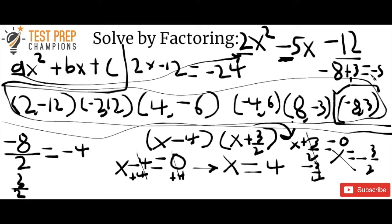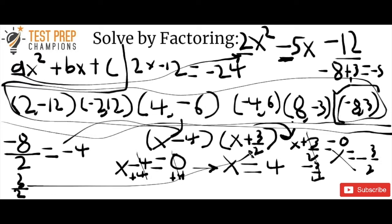Once you get your pair — negative 8 and 3 — look at your a term, divide them both by it, and simplify if possible. Negative 8 divided by 2 is negative 4; 3 over 2 stays as is. Then write x minus 4 and x plus 3 over 2, set each equal to zero, and solve for x to get your two solutions.